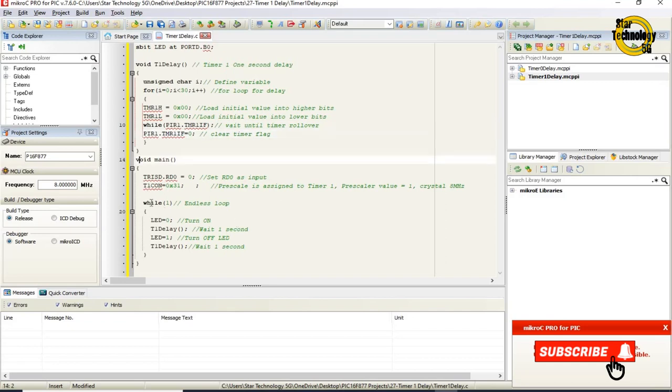void main. Main function. TRISD.RD0 equals zero. Set port D pin RD0 direction as output pin. T1CON equals 0x31. Prescaler assigned to Timer 1. Prescaler value equals 1:8 and we are using 8 MHz crystal.